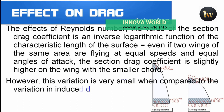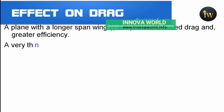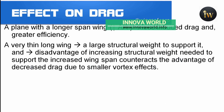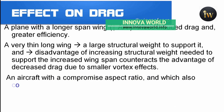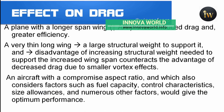However, this variation is very small compared to the variation in induced drag with changing wingspan. Induced drag can be reduced by increasing the wingspan, i.e., the aspect ratio. An airplane with a longer span wing has less induced drag and greater efficiency. But structural considerations become dominant — a very long thin wing requires large structural weight to support it, and there comes a point where the advantage of increasing span is counteracted by the weight increase. Aircraft therefore compromise on aspect ratio, also considering fuel capacity, control characteristics, size allowance, and numerous other factors for optimum performance.